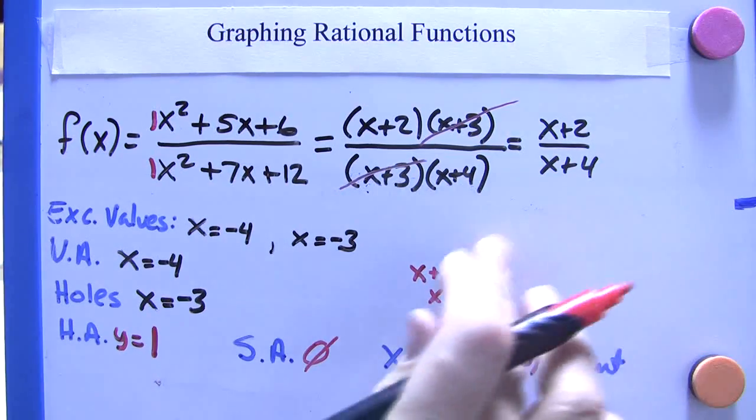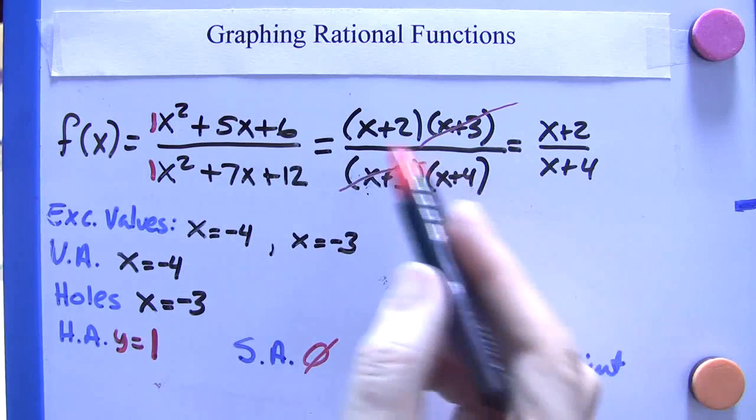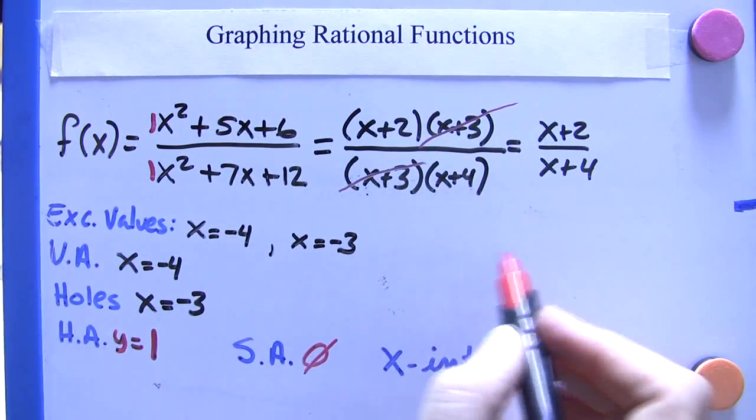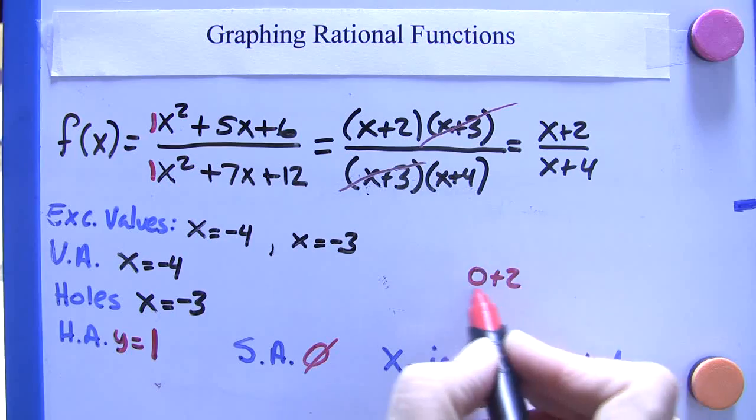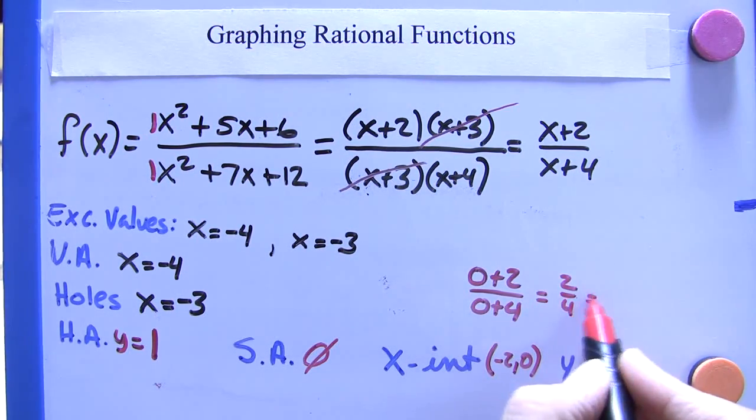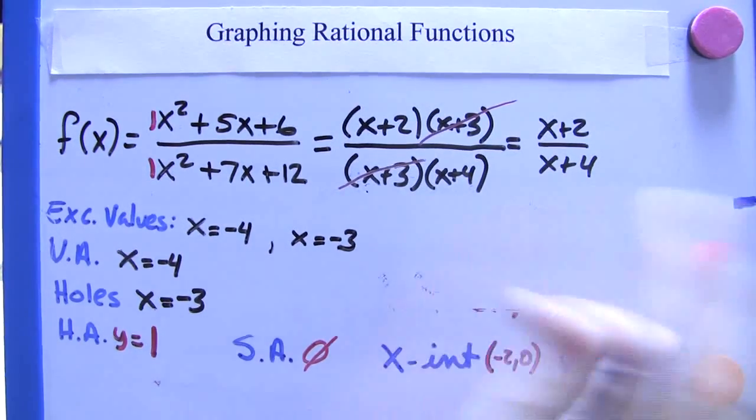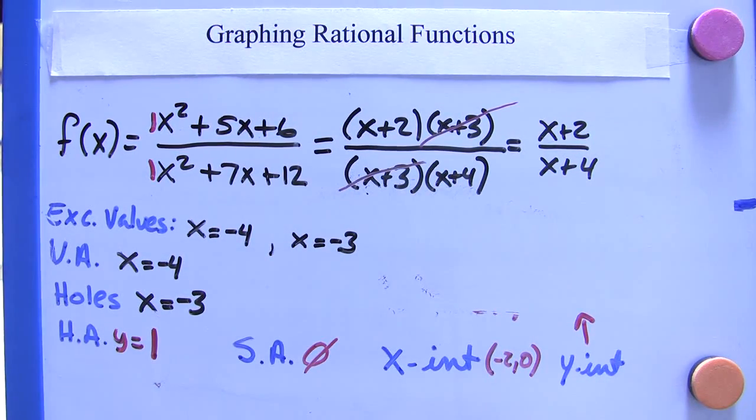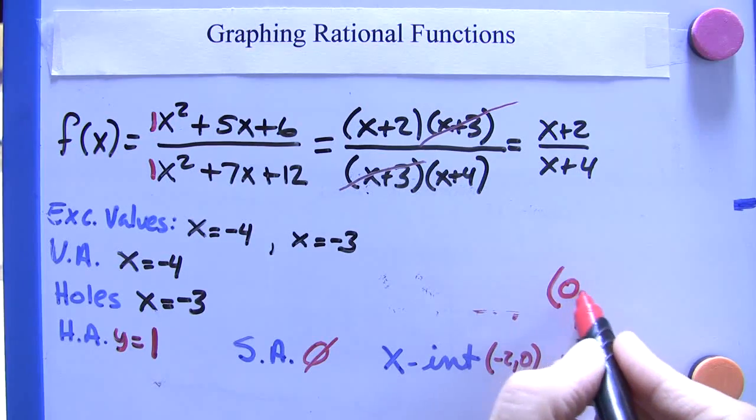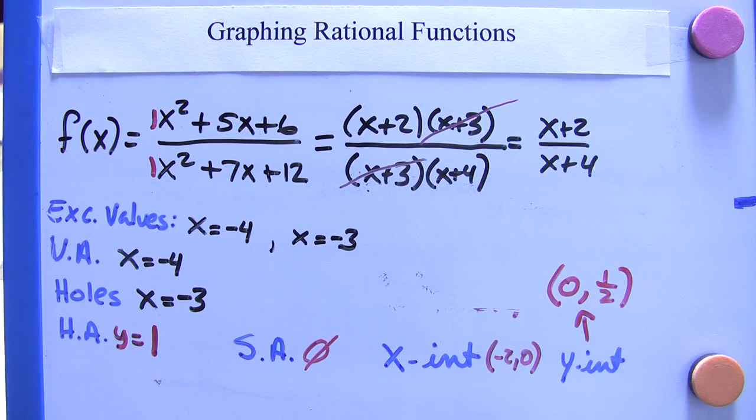And for the y-intercept, there we set the overall value of x in the equation equal to 0. So that would be like saying 0 plus 2 over 0 plus 4. And that's 2 over 4, which is 1 half. So we have this y-intercept. That's where x is 0 and then y is 1 half. So these are the points we need to graph this rational expression.